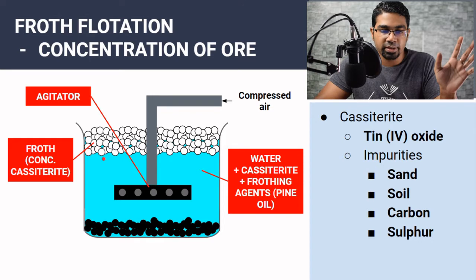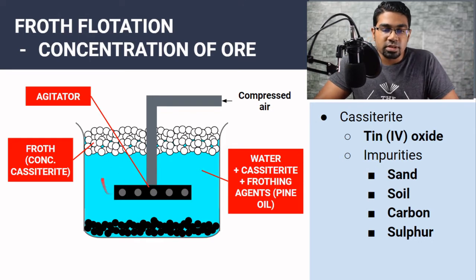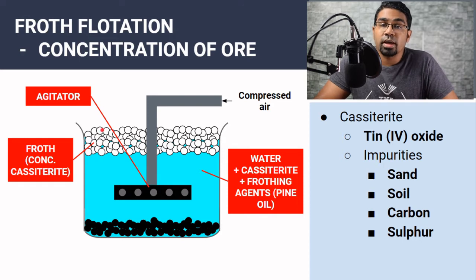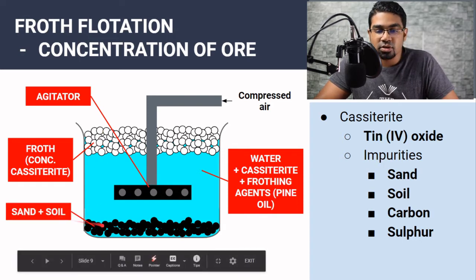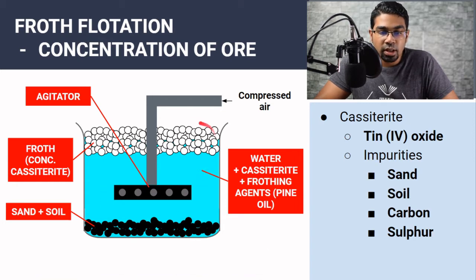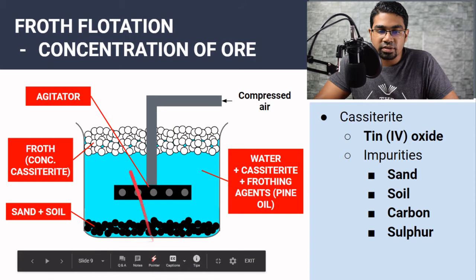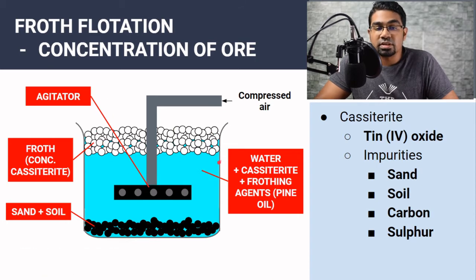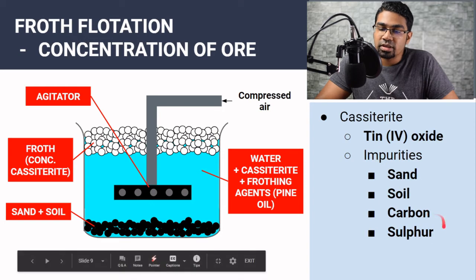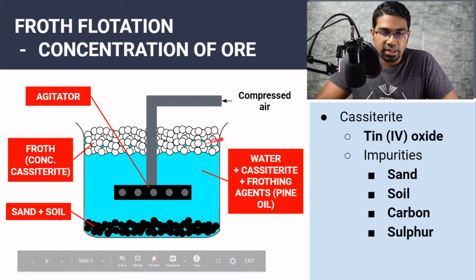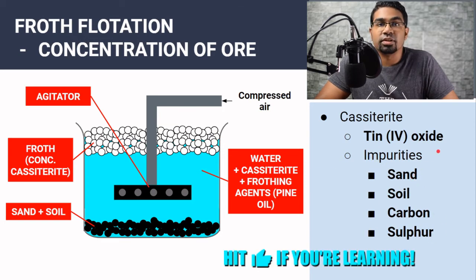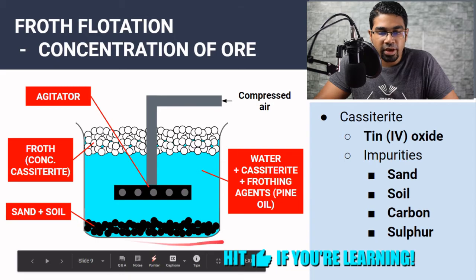The principle is based on the wettability of the ore. The ore will stick around the bubble and float to the top, while what is left — the impurities such as sand and soil — will sink to the bottom. This is how they separate the ore from impurities. This ore is still not pure; it still contains other impurities such as carbon and sulfur, with some sand and soil remaining, though a lot of it will have sunk to the bottom.